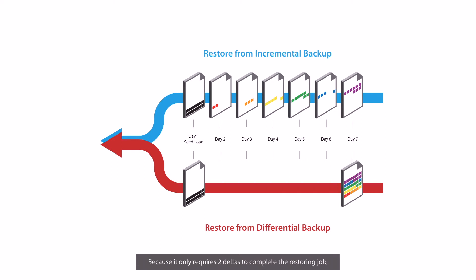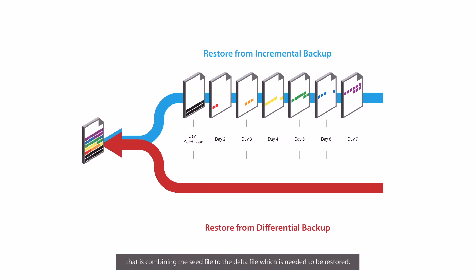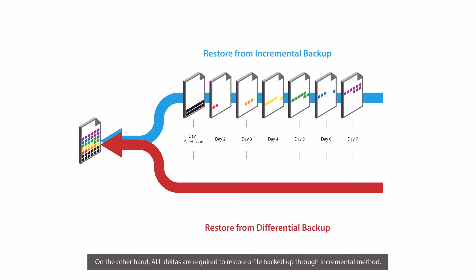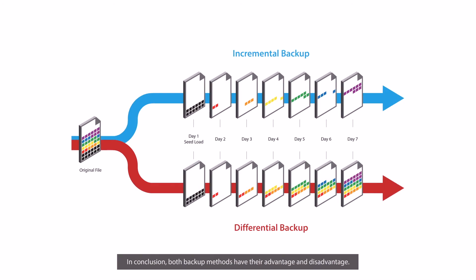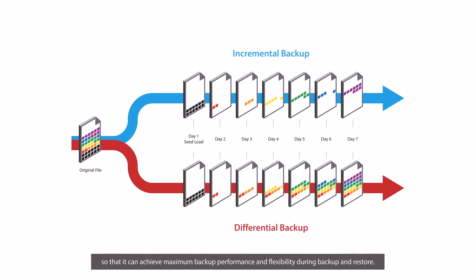This is because it only requires two deltas to complete the restore job — combining the seed file with the delta file that needs to be restored. On the other hand, all deltas are required to restore a file backed up through the incremental method. In conclusion, both backup methods have their advantages and disadvantages. An optimal data protection strategy should include both backup methods, so that it can achieve maximum backup performance and flexibility during backup and restore.